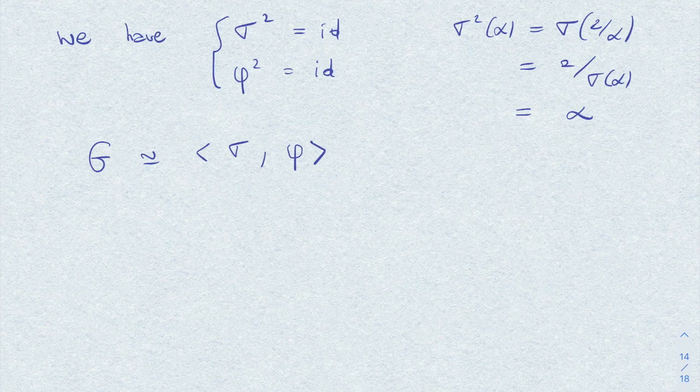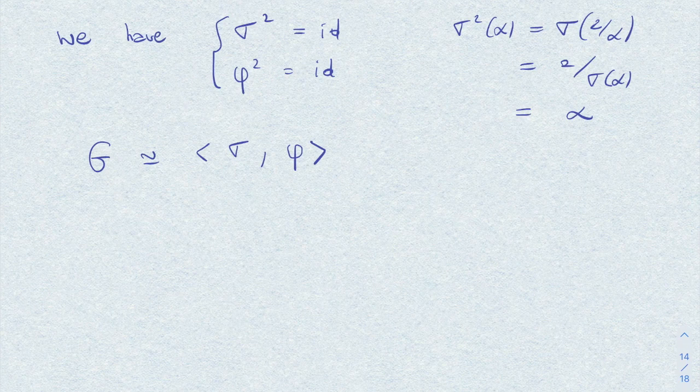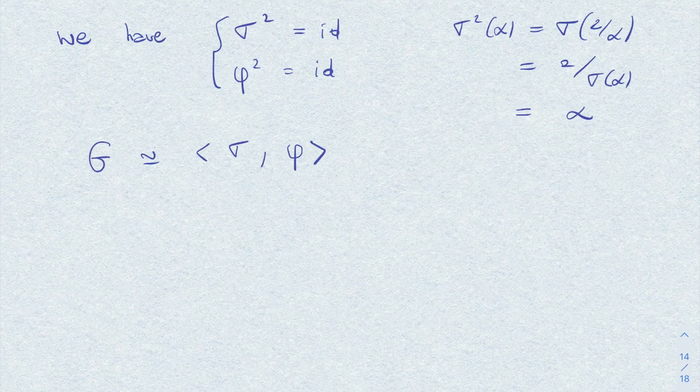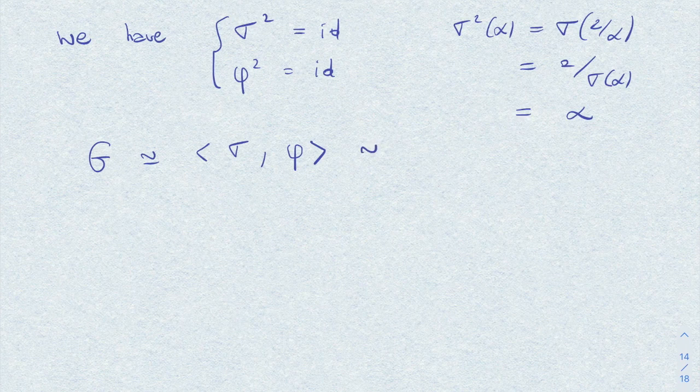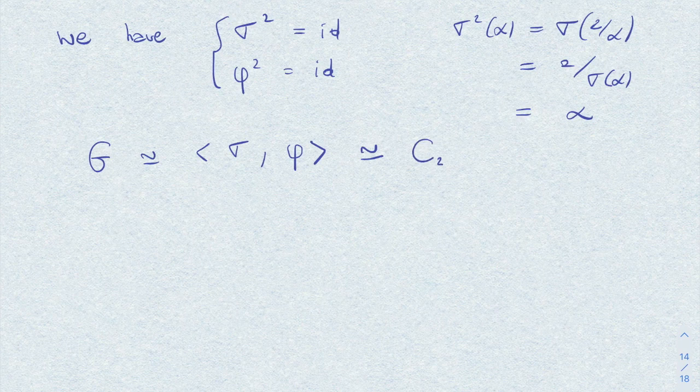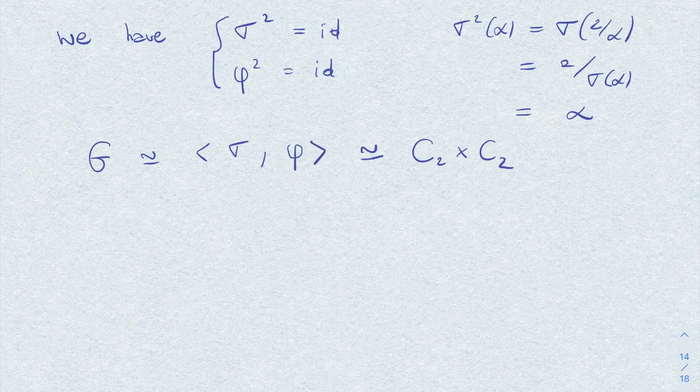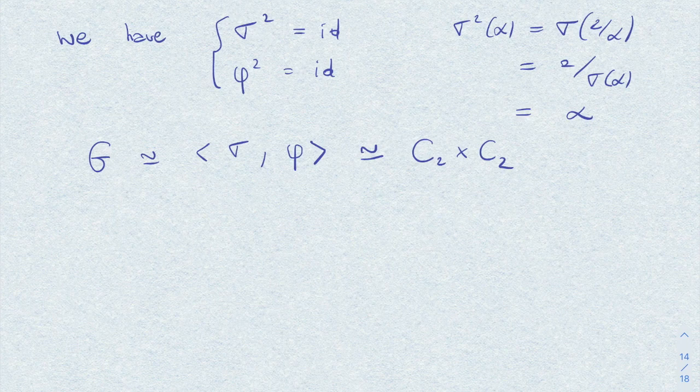And we are talking about a group of order 4 with two elements which are of order 2, and the only group with this property is the product of the cyclic group of order 2 with itself.